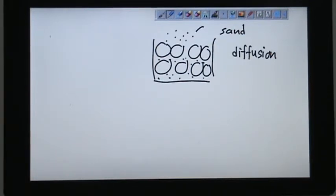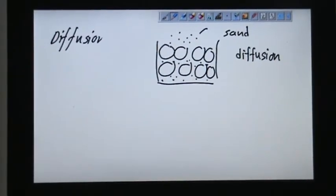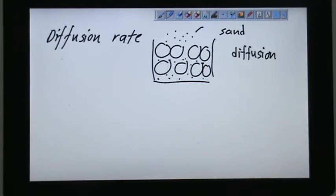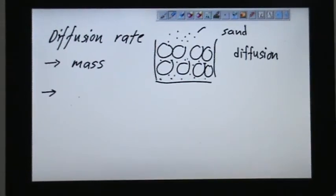So diffusion rate actually depends on many factors. Let's consider the most important factors. Two important factors: one is mass and one is temperature.